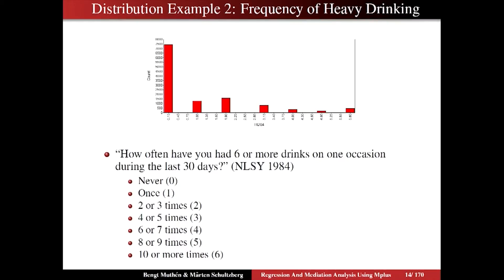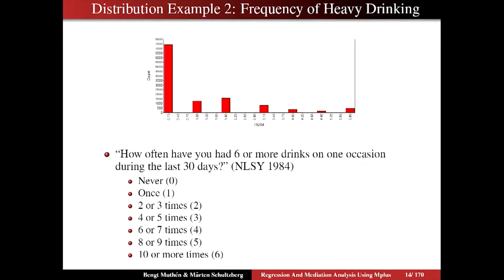Although we will actually work with this example as a censored model — taking the step of assuming that this part of the distribution corresponds to continuous variable development.